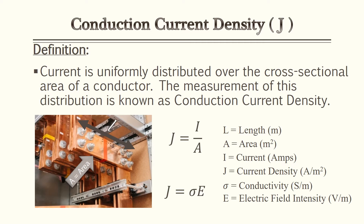Whereas a bus bar — like we have in the picture — is a very big bus bar, so if you have a low current it's not as dense; it's spread out through that whole bus bar. That's how you come up with the density: J equals current over the area. We'll go over that more in the examples.